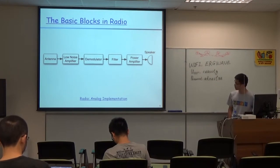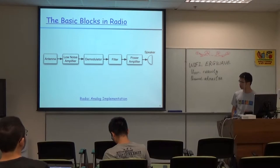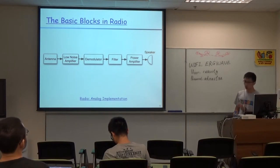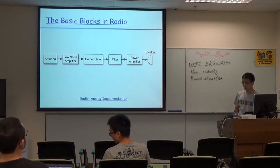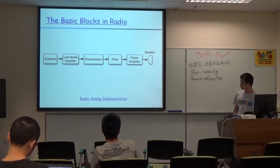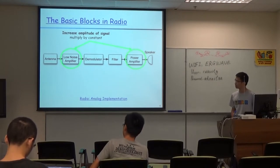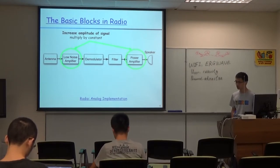To understand this concept, let's first look at the building blocks of a radio. Here I show an example of an analog radio receiver. It has basic blocks such as an antenna, an amplifier, a demodulator, and a filter. The amplifier increases the amplitude — the signal strength.